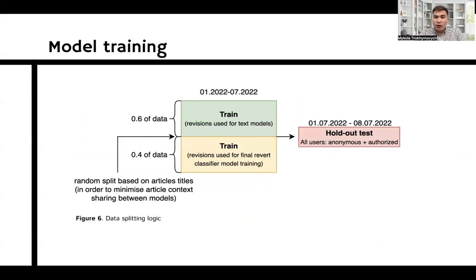To train the model, we split our training dataset into two independent parts. We do that randomly, however, making sure that different articles are in different parts. We also have a holdout dataset of one week to evaluate the final solution.